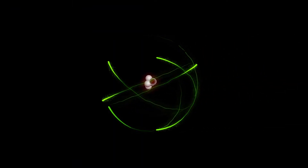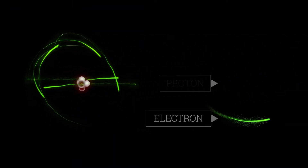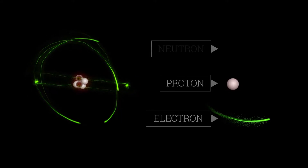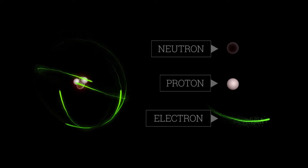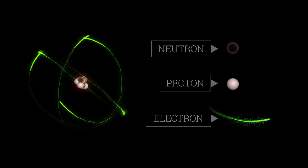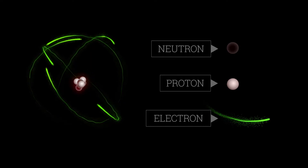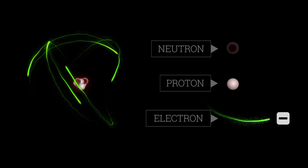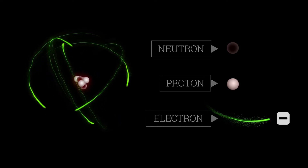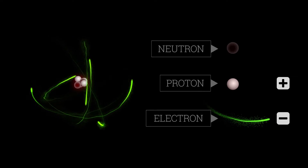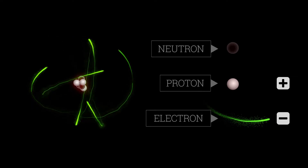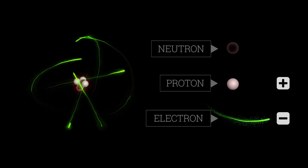The universe's matter includes atoms, made up of particles like electrons, protons and neutrons. When an atom has the same number of electrons, which are negatively charged, and protons, which are positively charged, we call it neutral.